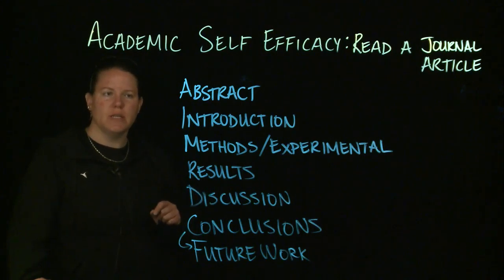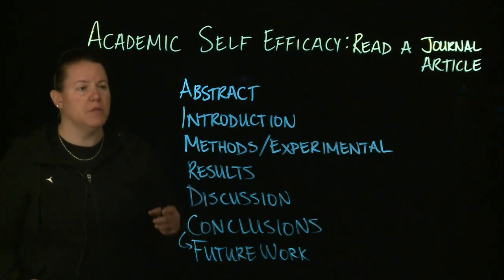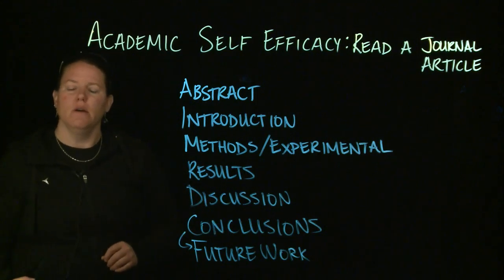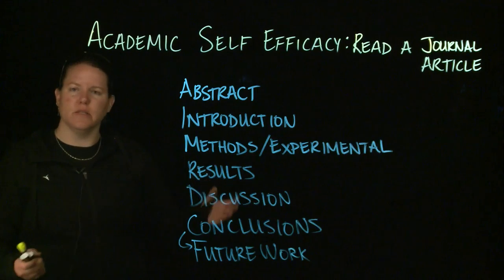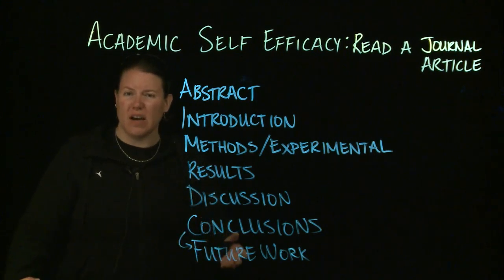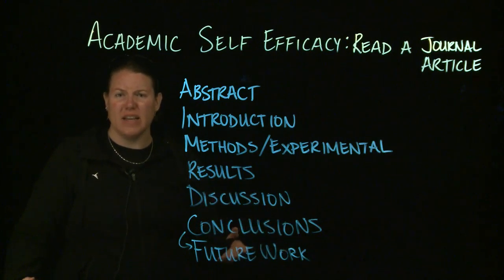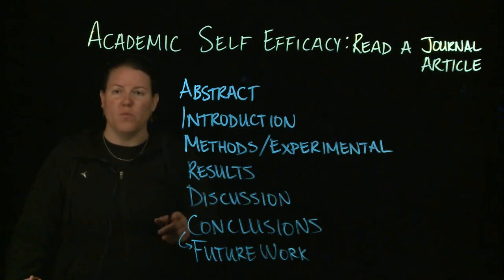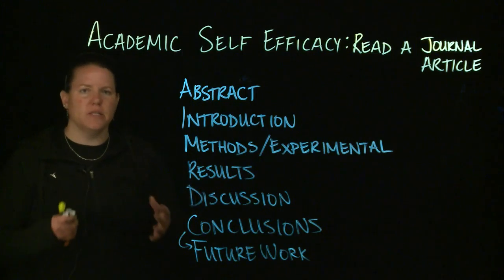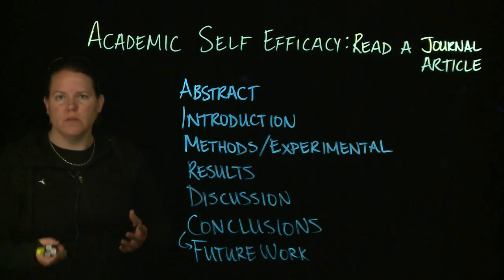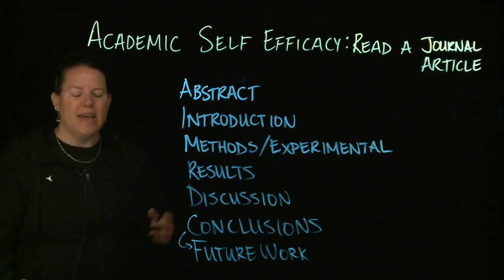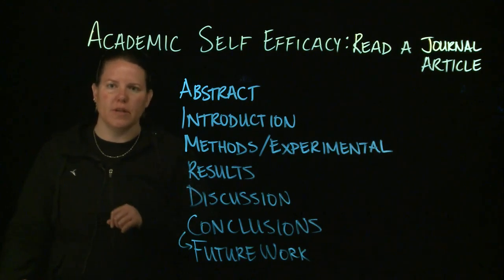Your job, most of the time, is to read the abstract first — that's their summary of the article, what they're saying this article is about. Then you're going to read the conclusions: what did they come up with, what did they decide in the end? You're going to read the discussion, which says, based off of previous work, this is where we were and what we figured out from our results versus previous work. And if all else fails, you might also read the results.